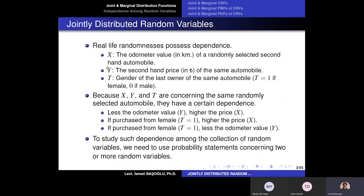Let's say Y, capital Y, is the second-hand price of that automobile. Again, you wouldn't know the price either, so it is also another continuous random variable. Now I am asking you: if somebody tells you that the odometer value of that automobile is more than 200,000 kilometers, then you would say the second-hand price is going to be very low. So the more kilometers it has traveled, the less the second-hand price is going to be.